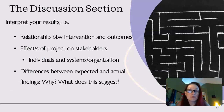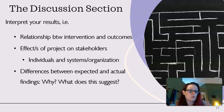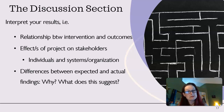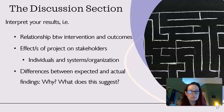This is where we're interpreting our results, which can mean a lot of things — the relationship between your intervention and the outcomes, the effects of the project on the stakeholders, individuals and systems or the whole organization, differences between expected and actual findings. If you expected to find A and you found Z instead, why might that be, what does that suggest, and where do we go from here? Do we need to narrow down something, or dig into a particular aspect of the question?